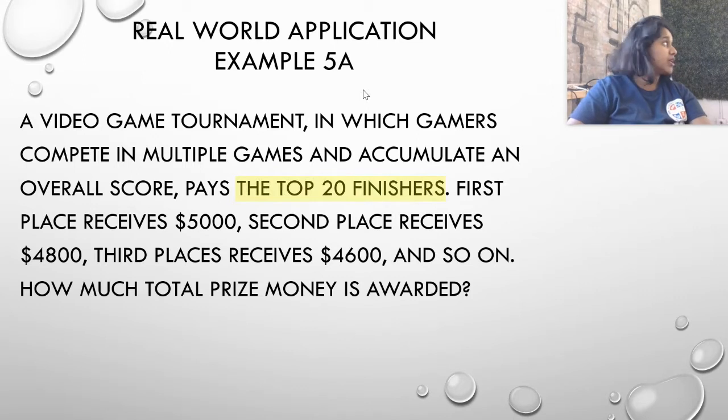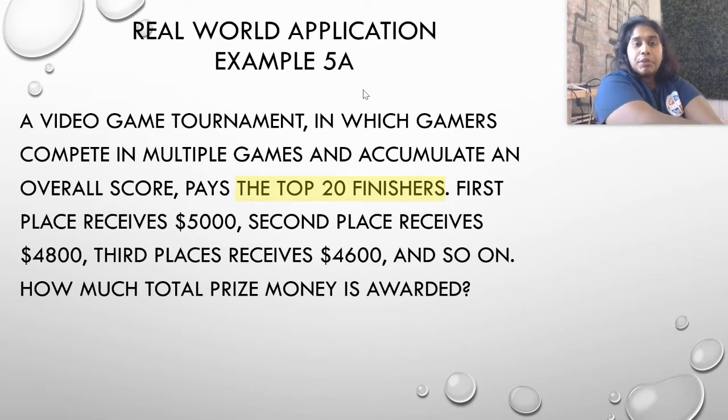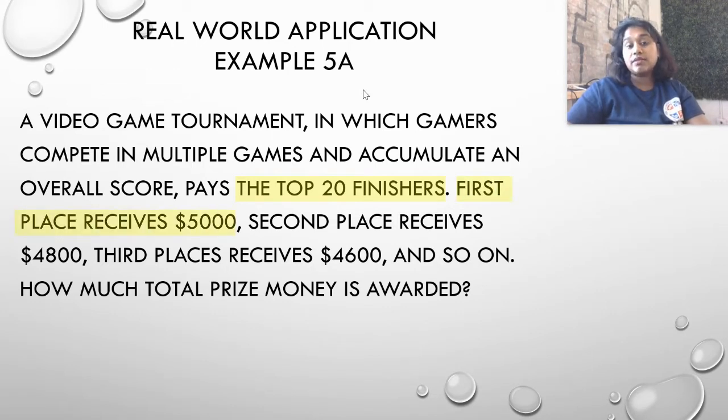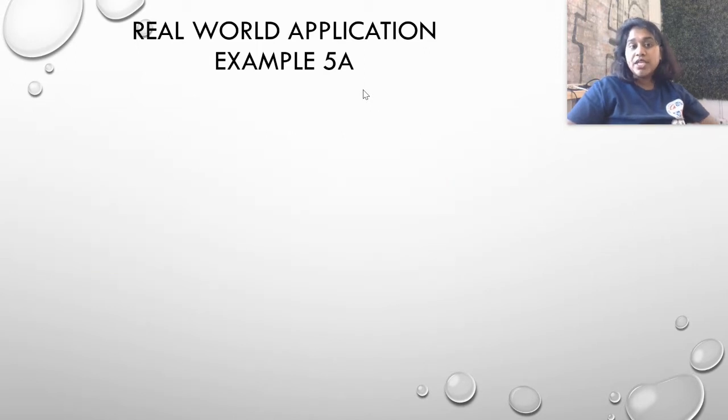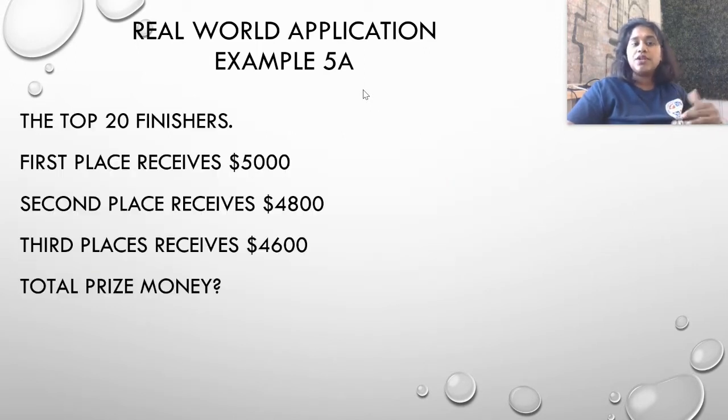First thing I'm going to do is highlight the most important information in this paragraph. So the top 20 finishers is a value I would highlight. The first place receiving $5,000, second place $4,800, and third place receiving $4,600 is something else I would highlight. And finally, the question itself, how much total prize money is awarded? So let's break up those various things into their mathematical equivalents.